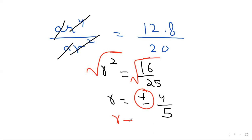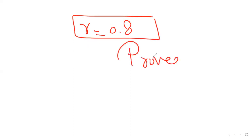But, it is given in the question that R is greater than zero. This means we will consider only the plus value. When we consider the plus value, it's 4 upon 5. And when we convert 4 upon 5 into decimal, it's 0.8. The first part is proved.